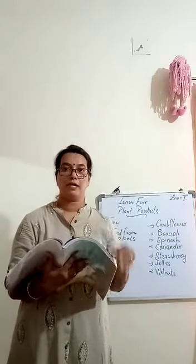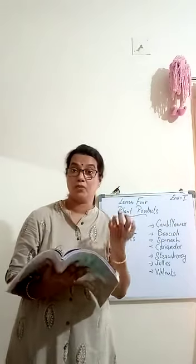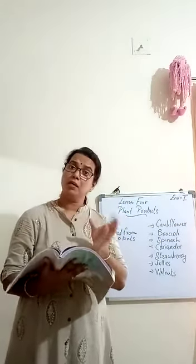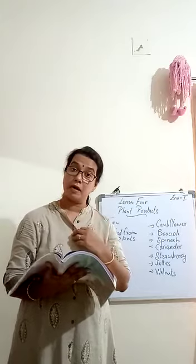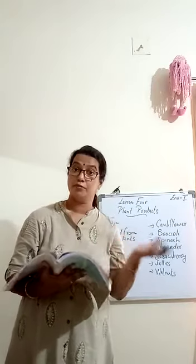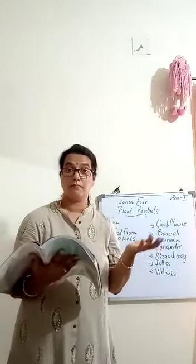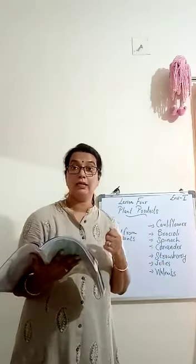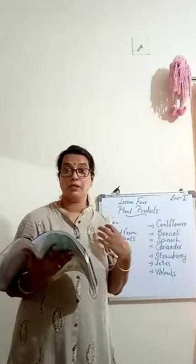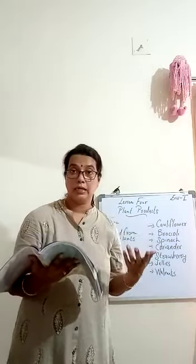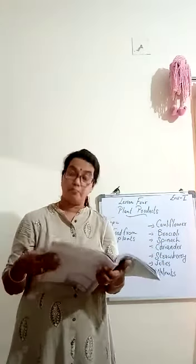For example, the first one was vegetables. Vegetables may be parts of a plant. For example, roots — carrot and beetroot. Then we learned from stems: potato and sugarcane. Now in this page, page number one eighty-three, we look at the remaining parts from which we get food.